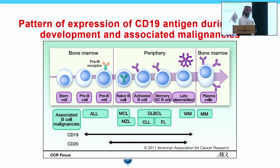CD19 is an interesting antigen to target in B-cell malignancies. It is expressed in different phases of B-cell development. Within this framework, CAR-T can target ALL, and in the lymph node where lymphoma develops, CAR-T can also be used to treat lymphoma.